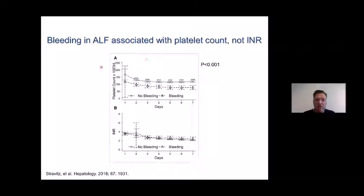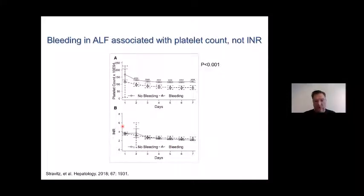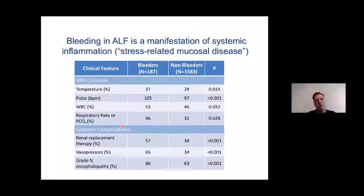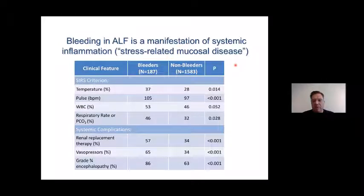Interestingly, bleeding in patients with ALF is associated with platelet count. Looking at platelet count over time from admission during the first week: in patients that bleed at some point, platelet counts are consistently lower, whereas INRs are the same in patients that experience bleeding or do not. Is then this lower platelet count the cause of bleeding? This is likely not the case, because the vast majority of bleeds in ALF are upper GI bleeds — likely not related to hemostatic failure, but a manifestation of systemic inflammation.